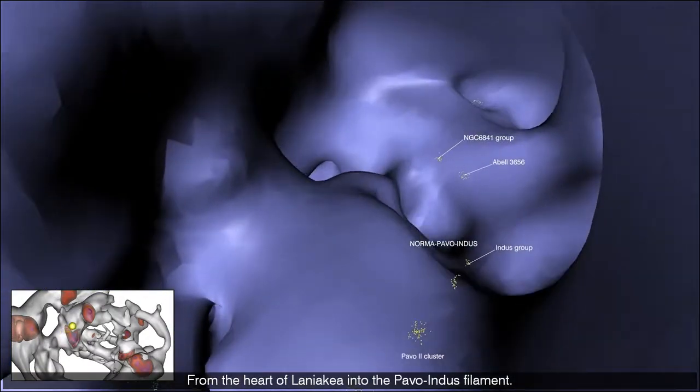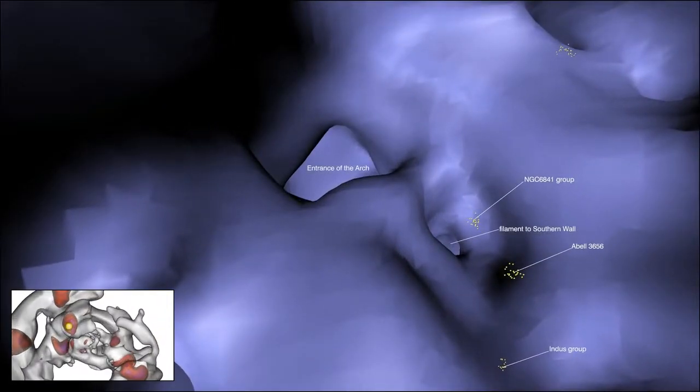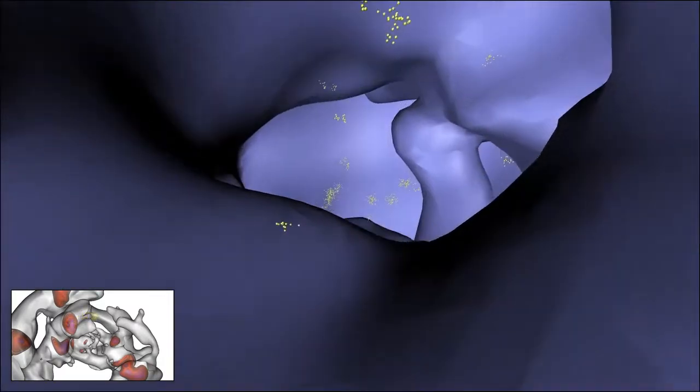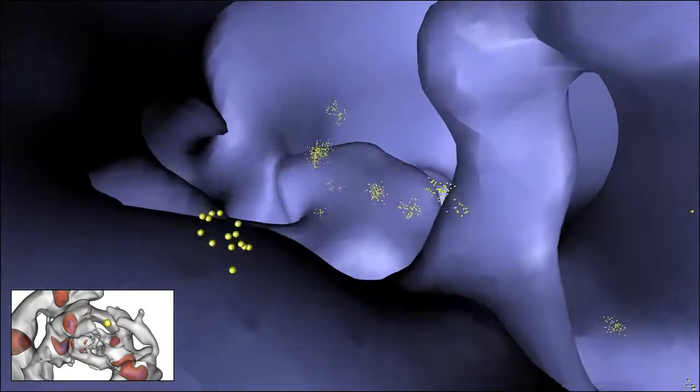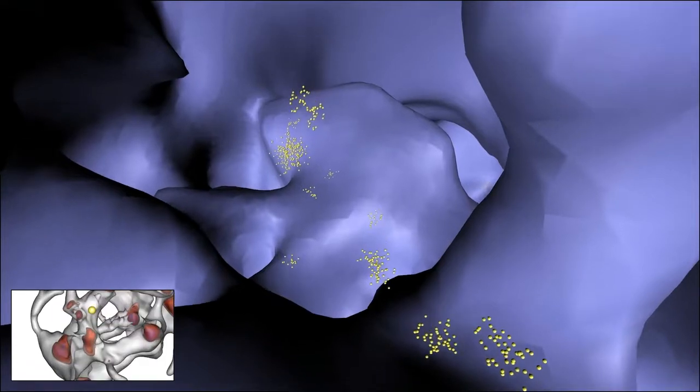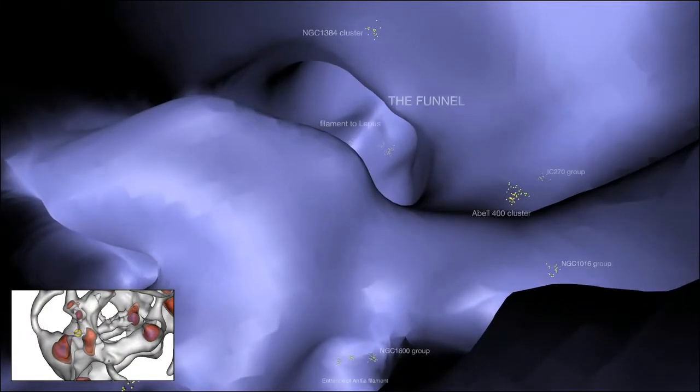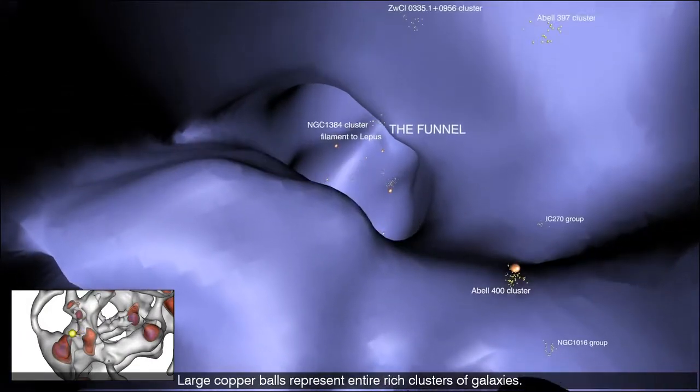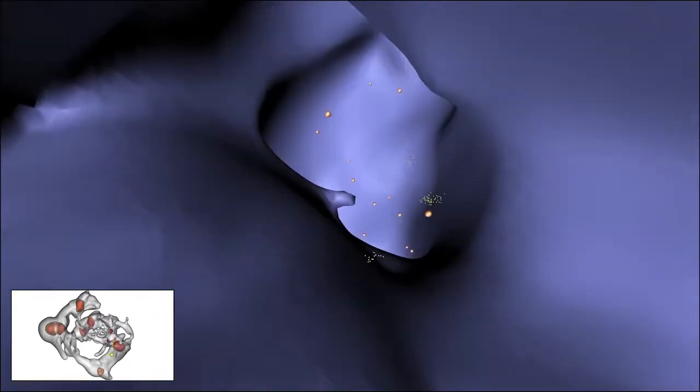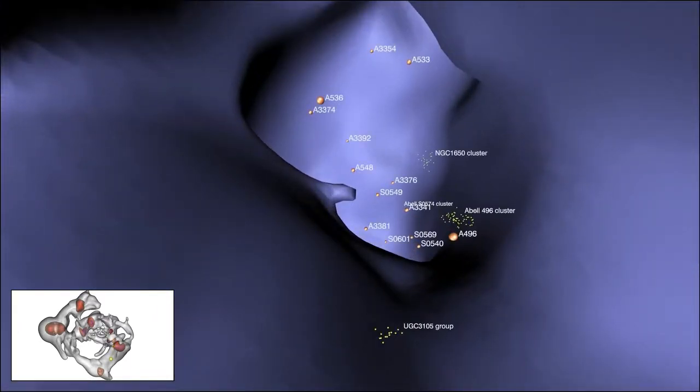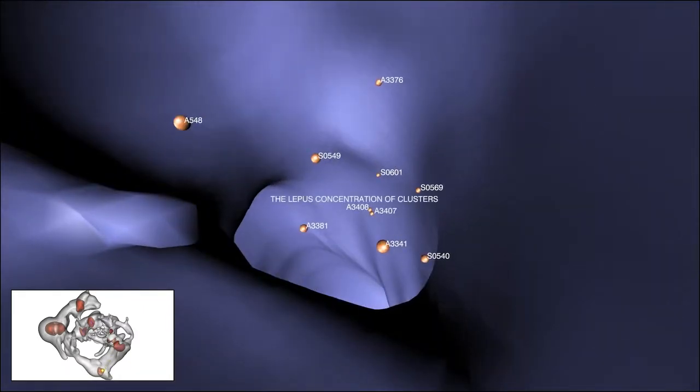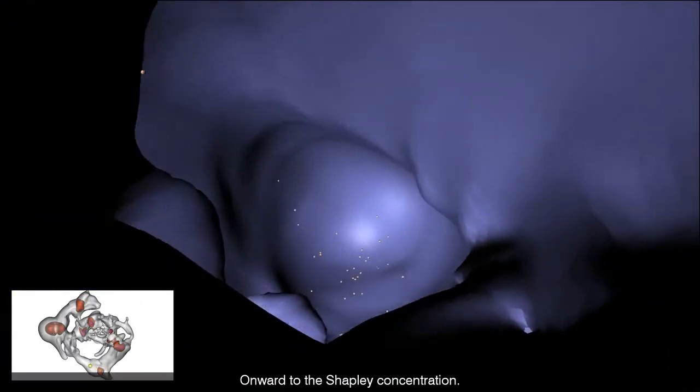From the heart of Laniakea into the Pavoindus filament. The Perseus Pisces filament. Onward to Lepus. Onward to the Shapley concentration.